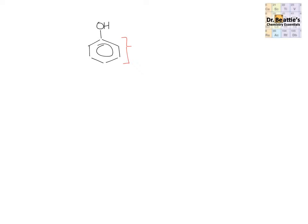Phenols are benzene rings connected directly from one of the carbons to a hydroxyl group. The name phenol originates from 'phenyl' for a benzene when it is not the main substituent — giving us 'phen' — and then our hydroxy group, just like alcohols, ends in 'ol', so we end up with the overall name phenol.